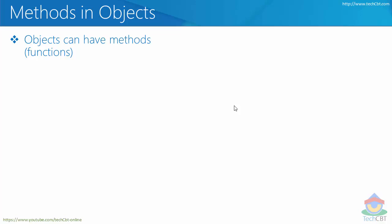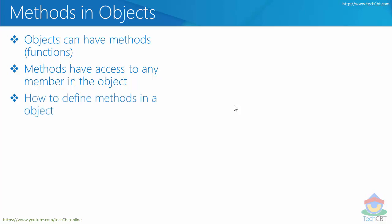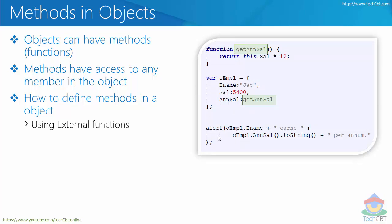Whenever you write a function inside an object, it is nothing but a method. Methods have access to any member in the object, so if you have an object with three or four properties, all of those properties are automatically accessible as part of the method you write inside that object. You can also have any external function made available as part of an object by assigning it to a member.